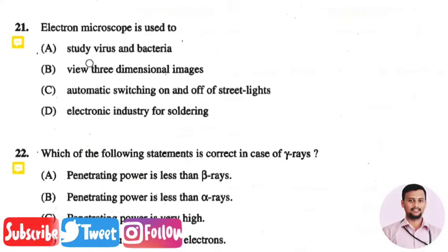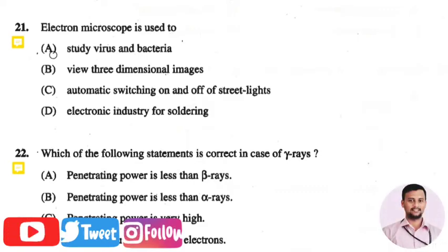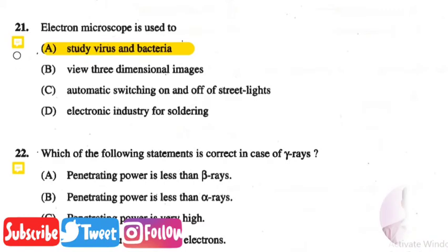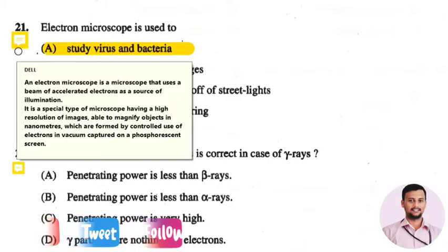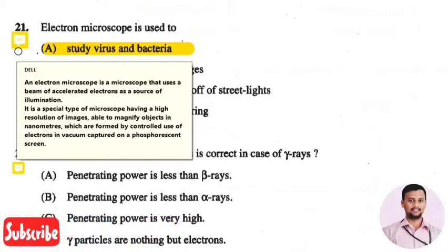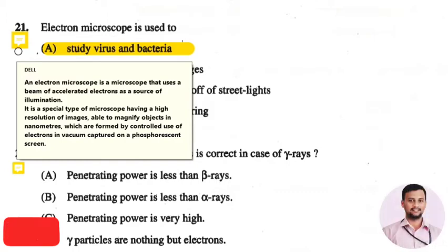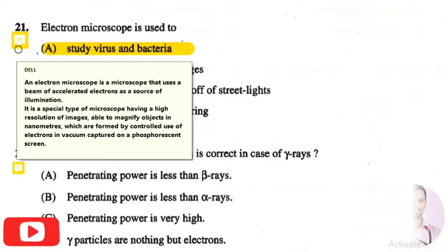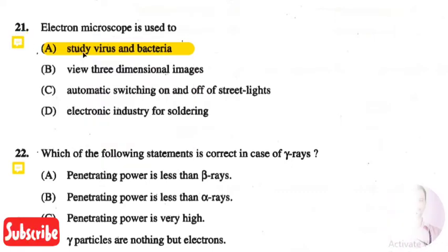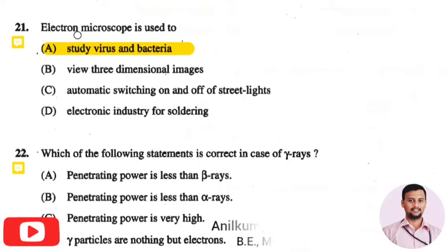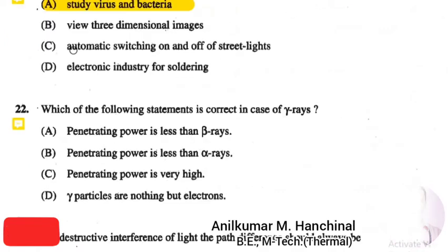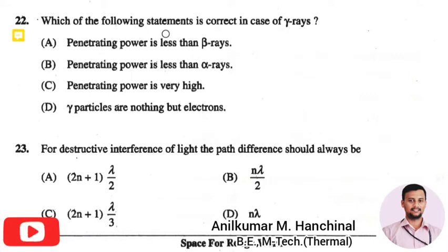The next question is: the electron microscope is used to — the right answer is option one: to study viruses and bacteria. An electron microscope is a microscope that uses a beam of accelerated electrons as a source of illumination. It is a special type of microscope having a high resolution of images, able to magnify objects in nanometers. So to study viruses and bacteria, electron microscopes are used.